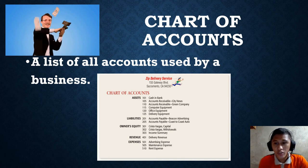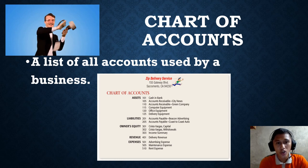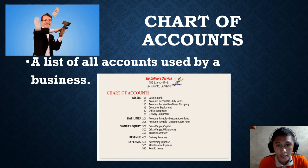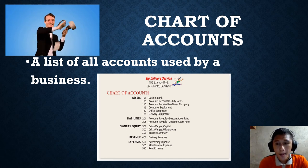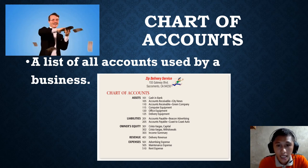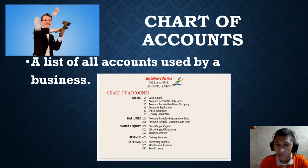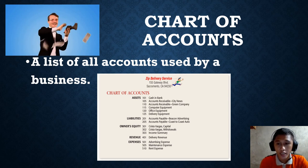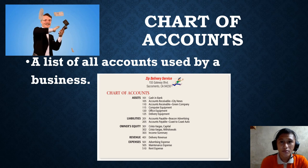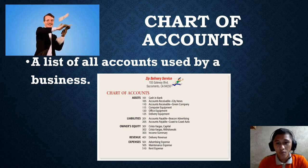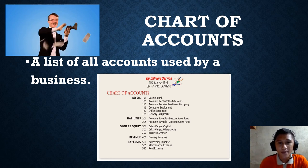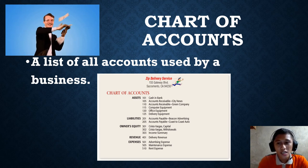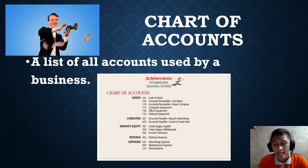This is the chart of accounts — a list of all accounts used by a business. For every element — assets, liabilities, owner's equity, revenue, and expenses — we have different kinds of accounts. For example, under assets: cash in bank, accounts receivable, delivery equipment; under liabilities: accounts payable. The chart of accounts serves as a table of contents because it identifies the specific code for each account, which will be used in journalizing and the ledger.